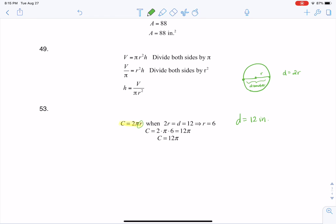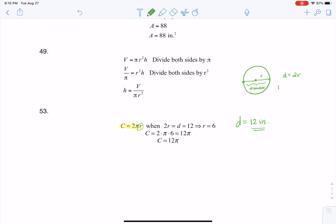Well, they also told us for this particular problem that the diameter was 12 inches long. So I know 12 is equal to 2r. If I want to divide by 2 on both sides, I'll get that r is equal to 6 inches.